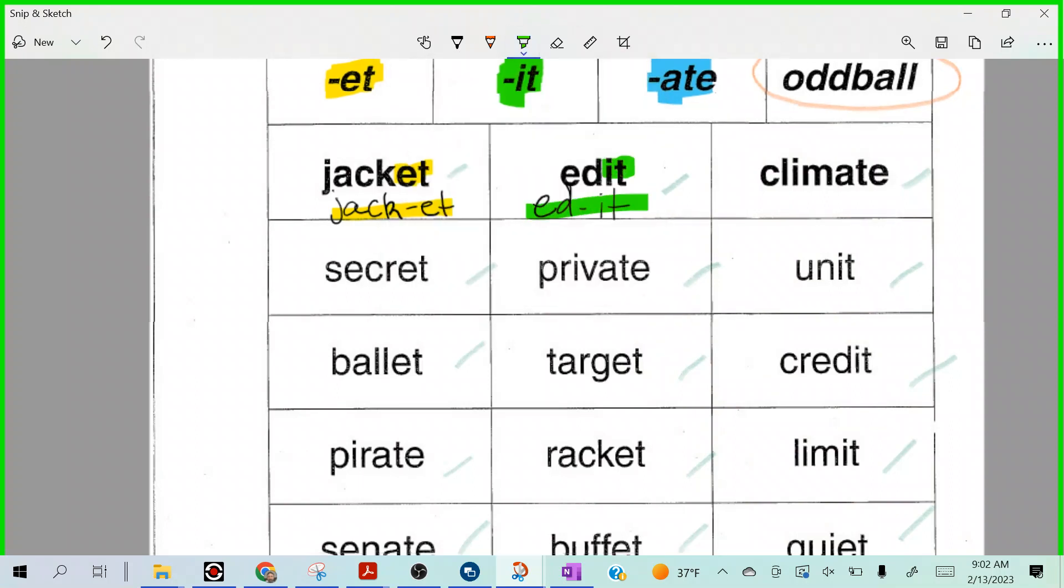How about climate? Where's it pick back up? Climate. Where's it? Yeah. Go ahead, Naomi. C-L-I split M-A-T-E. And what category would that fall under? Blue. A-T-E.